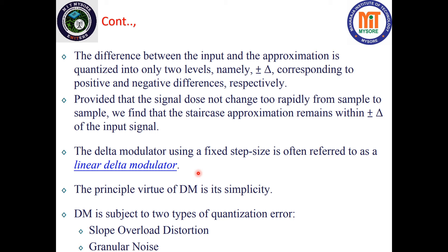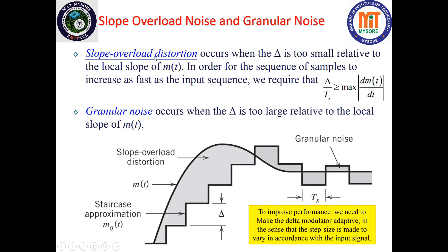Another important aspect of delta modulation is understanding two types of quantization errors. The first is slope overload distortion, which occurs when delta is too small relative to the local slope of m(t). As you can observe from this waveform, the delta is not able to catch up with the rapidly increasing m(t) — it is too small compared to the local slope — and therefore there is a large gap between the approximation and the original signal. This is called slope overload distortion.